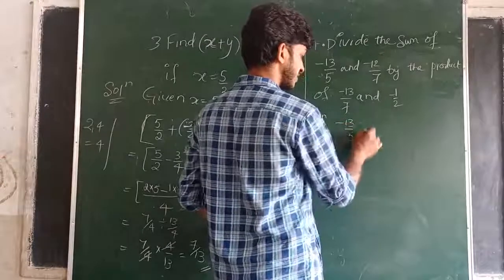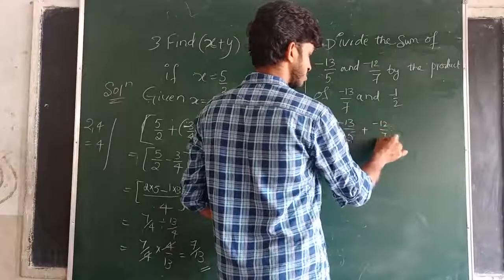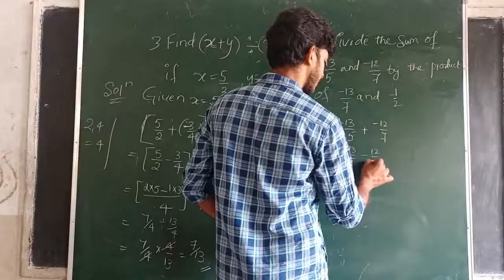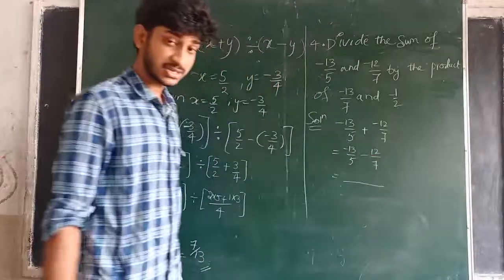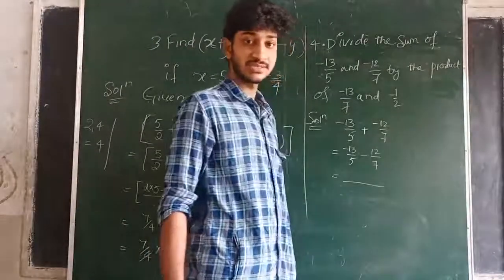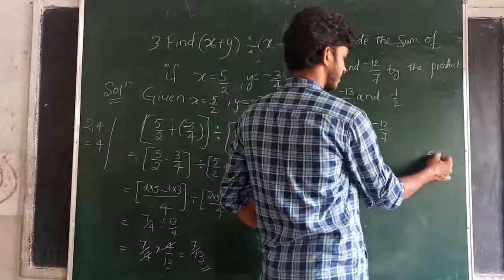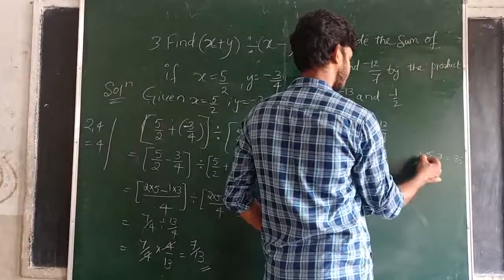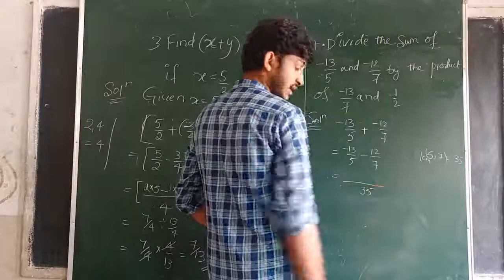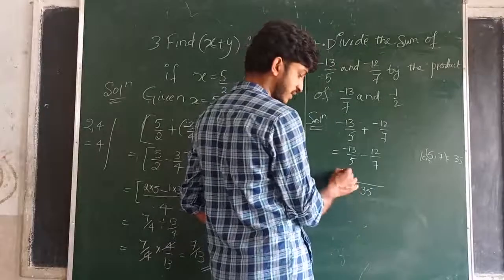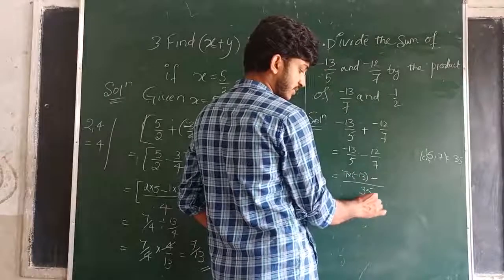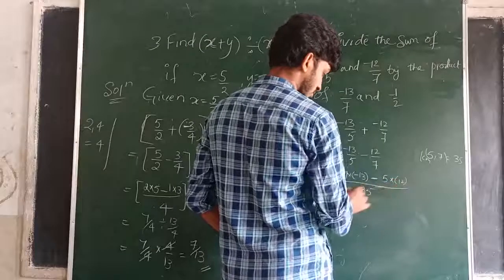So minus 13 by 5 plus minus 12 by 7 — plus into minus gives minus — so minus 13 by 5 minus 12 by 7. The denominators are 5 and 7, both are different, so I am taking the LCM of 5 and 7. LCM of 5 and 7 is 35. Taking 35 as denominator: 35 divided by 5 is 7, so 7 into minus 13; 35 divided by 7 is 5, so 5 into 12.